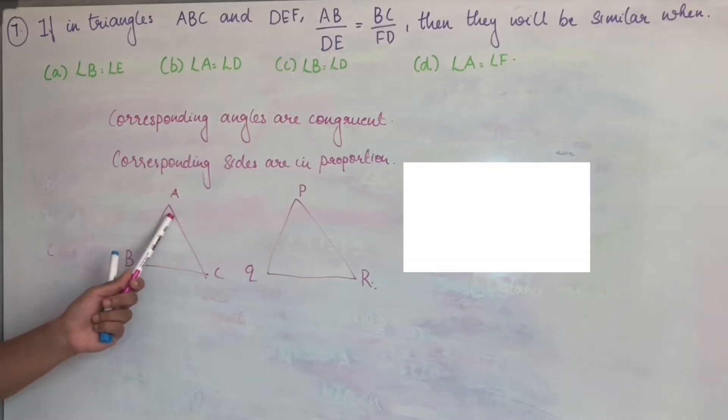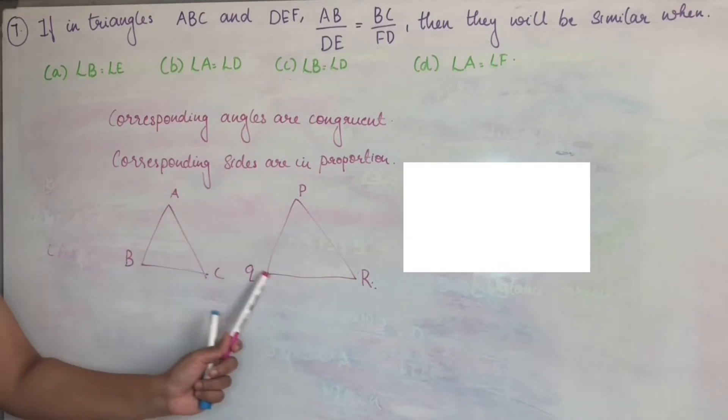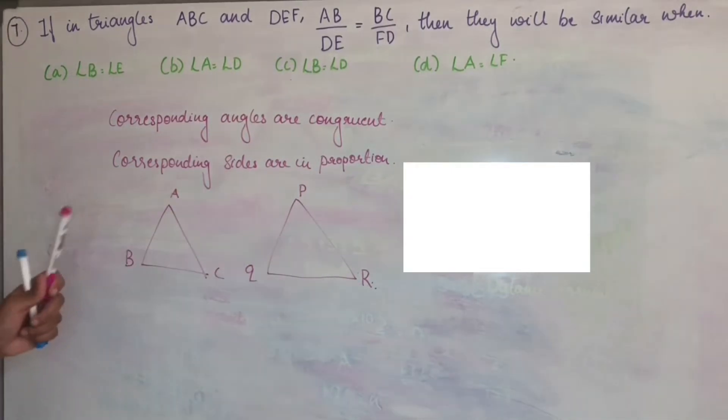That means what? A and the corresponding angle are P. Angle A is equal to angle P. Similarly, angle B is equal to angle Q. Angle C is equal to angle R. Next, corresponding sides are in proportional. That is,